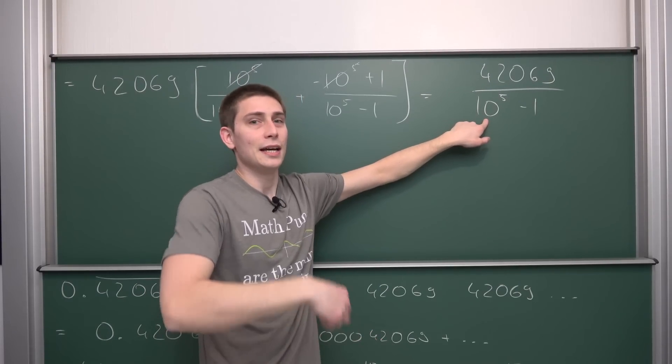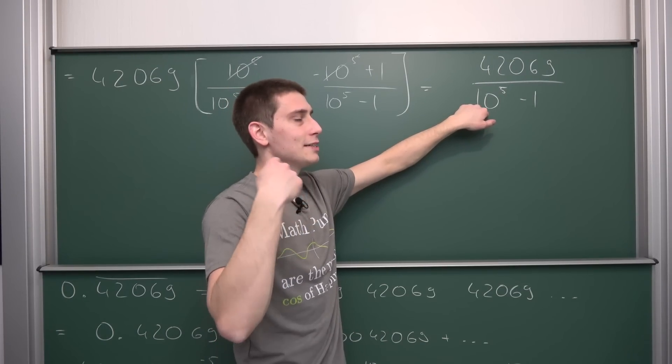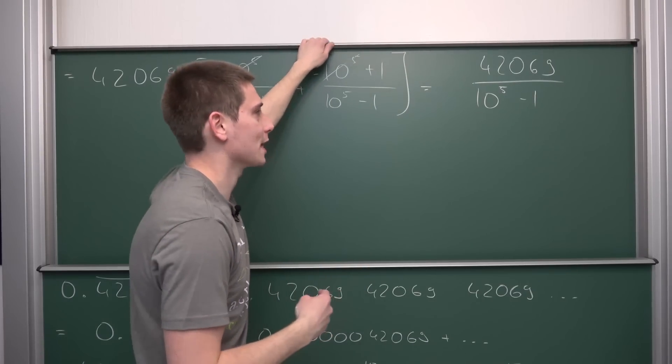I mean, 10 to the fifth power is nothing but—it's 10 thousand, no, 100,000.